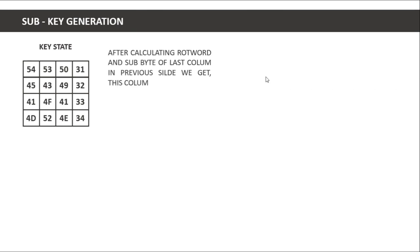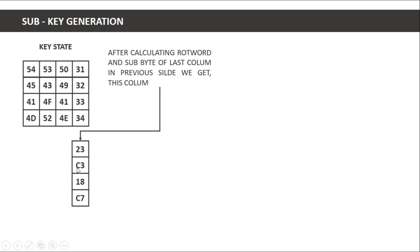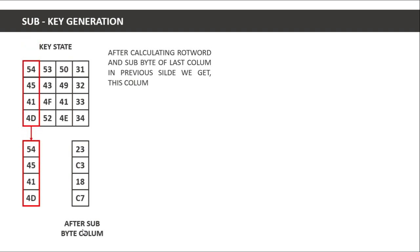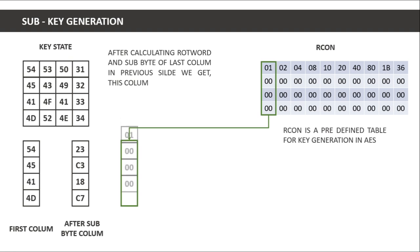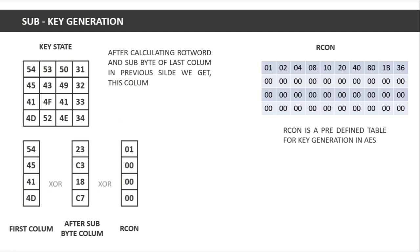After calculating rot word and sub byte of the last column from key state zero, we XOR the result with the first column of key state zero and also with the r-con value. R-con is a predefined table with 10 columns — one for each of the 10 rounds for a 128-bit key. This XOR gives us the first column of sub-key one.